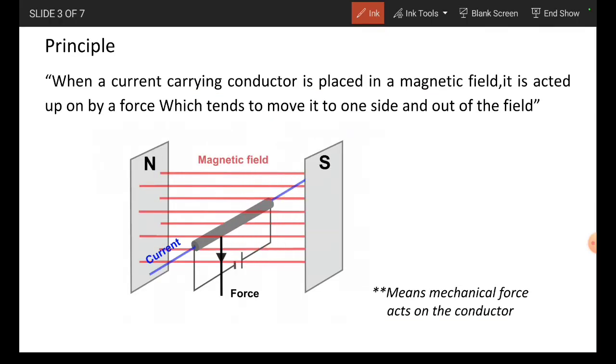Regarding the principle, when a current carrying conductor is placed in the magnetic field, it is acted upon by a force which tends to move it to one side and out of the field, which means that a mechanical force acts on a conductor.